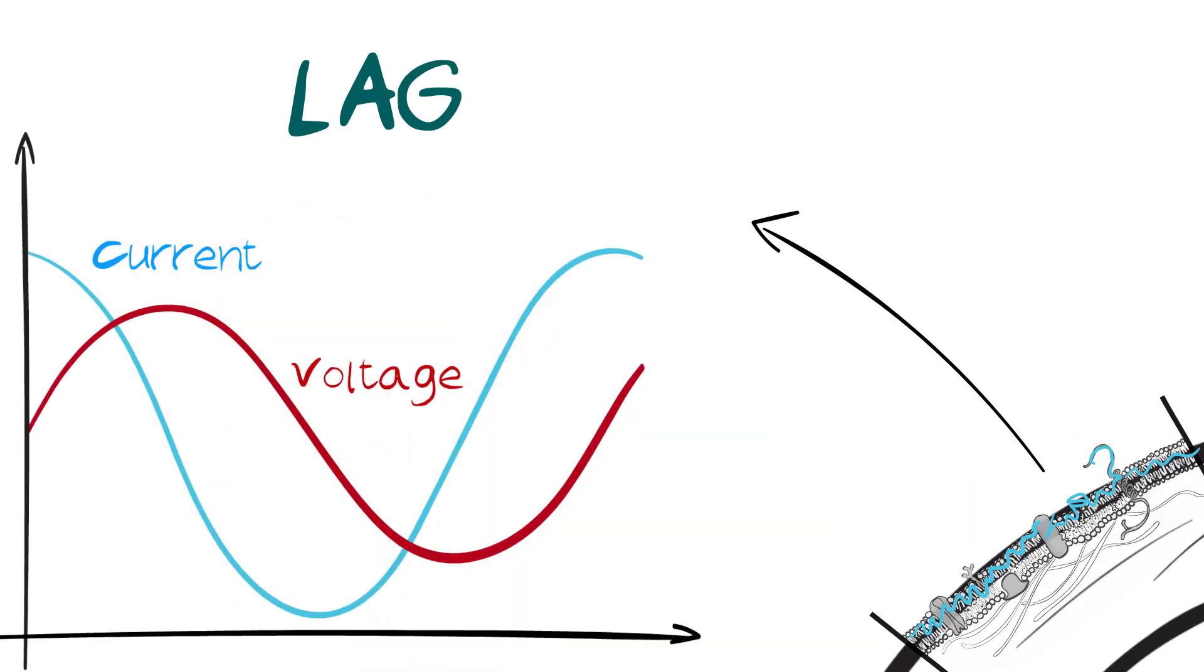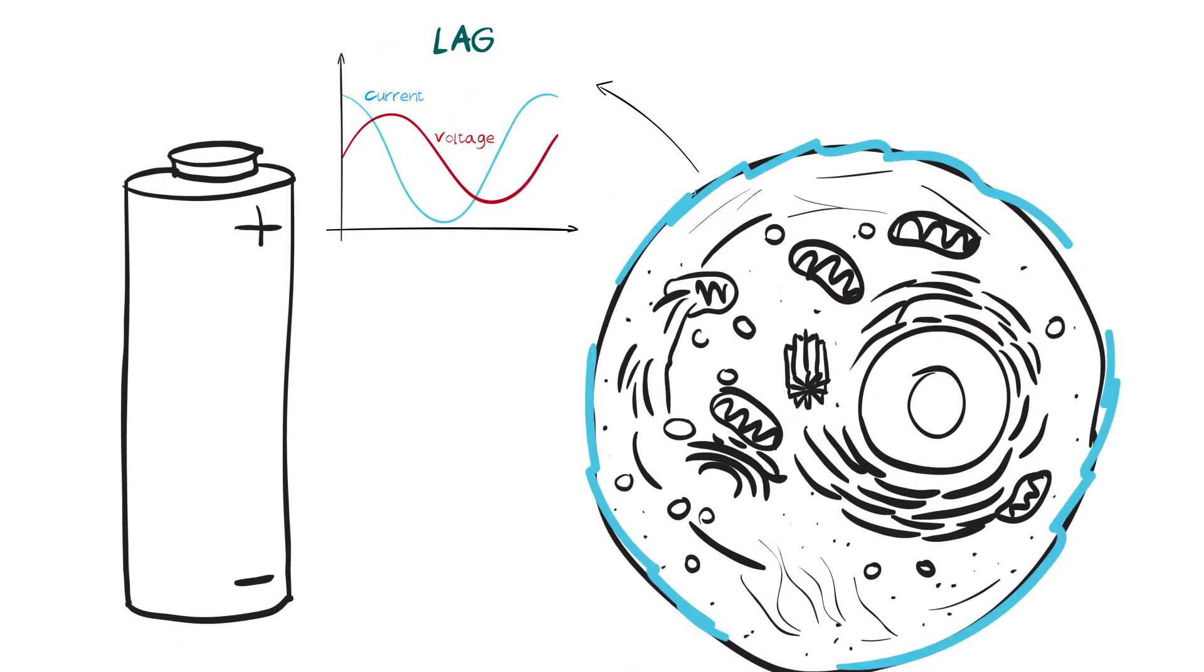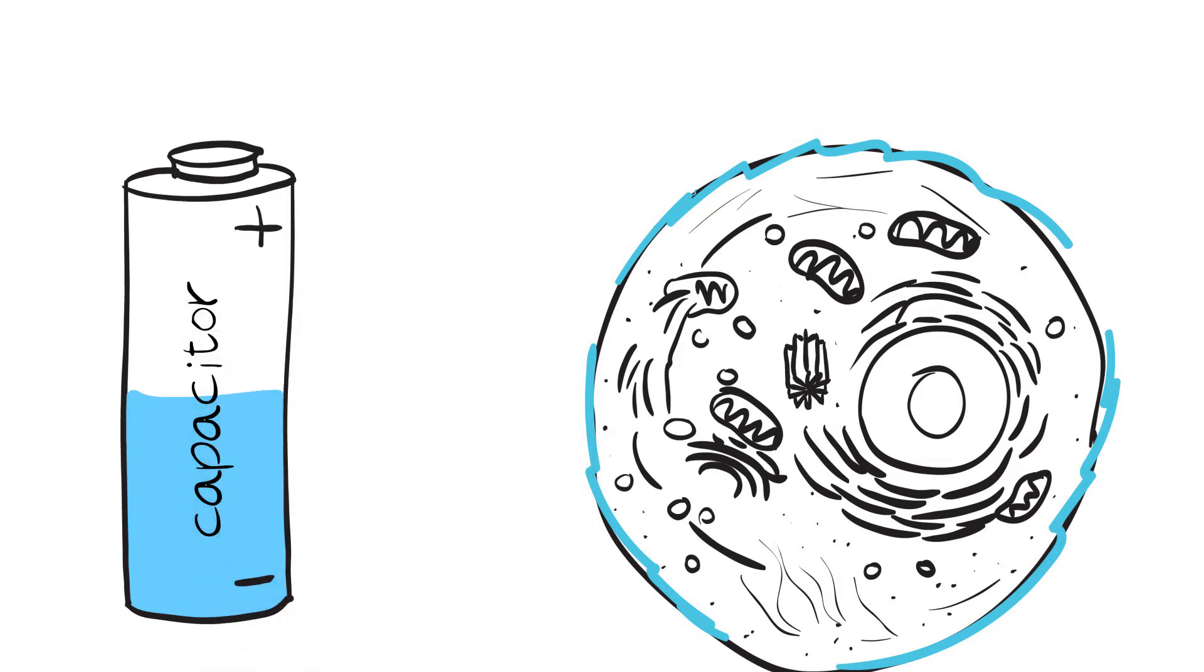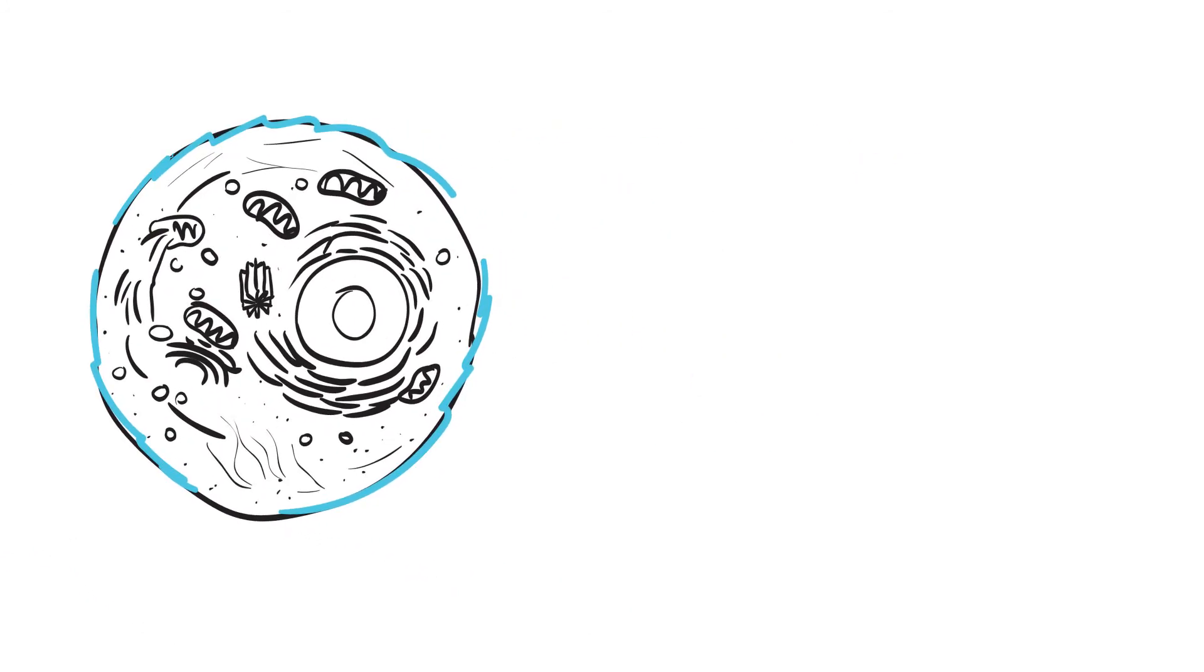The slowed current is said to lag behind the rest of the current, and the cell membranes can hold this charge for a short period of time. For this reason, cell membranes can be considered to act as capacitors.